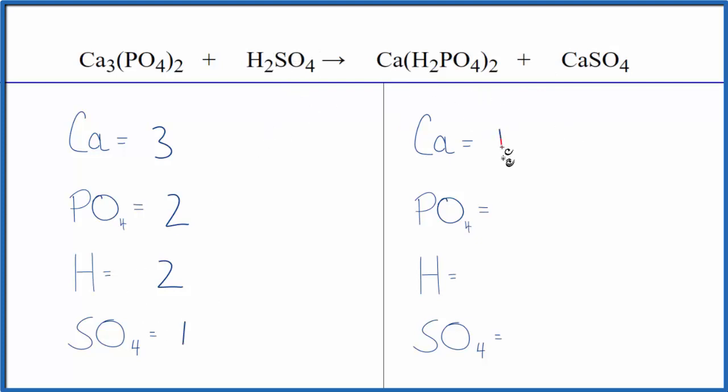Product side, one calcium. Phosphates, I have two times this phosphate here, so I have two of those. Two times two for the hydrogen, four, and then sulfate, I just have the one. I also noticed that there's a calcium here I didn't count. You've got to be careful with that. Make sure you count all of them. So since we have these calciums, two calciums in separate compounds, this is a little bit of a more difficult equation.